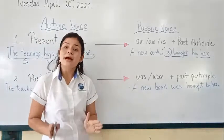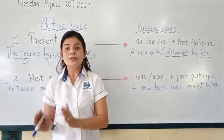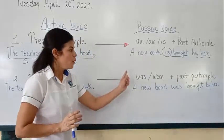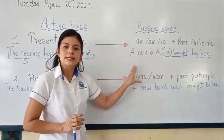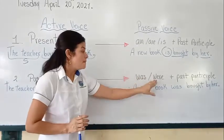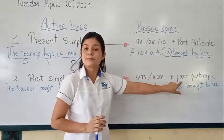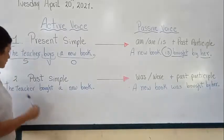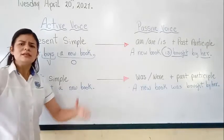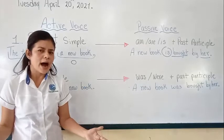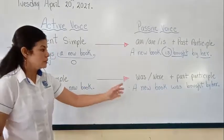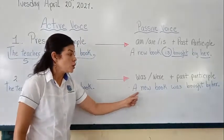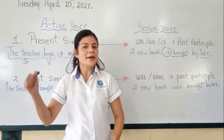The verb 'to be' in past simple — because your active voice is in past simple, your passive voice needs this grammar structure: verb 'to be' in past simple, plus the past participle of the main word. Let's see the example. The teacher bought a new book — this is the subject in this sentence. A new book was bought by her.